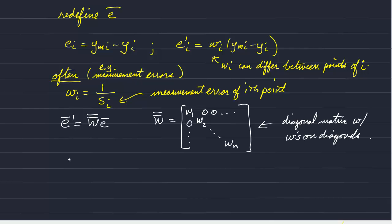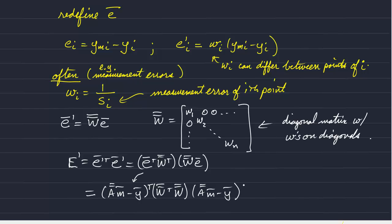So our new sum of square misfits, which is capital E prime, becomes E prime transpose times E prime. And that is equal to E transpose W transpose times W E. And that again was our matrix A times our model coefficients minus Y transpose, that's our error, the transpose of our error vector times W transpose times W times our error vector again.